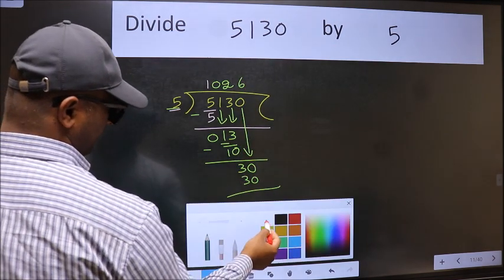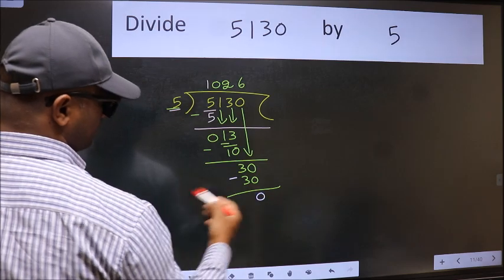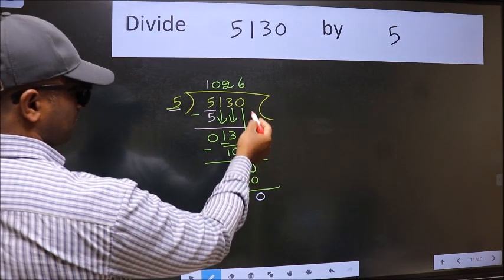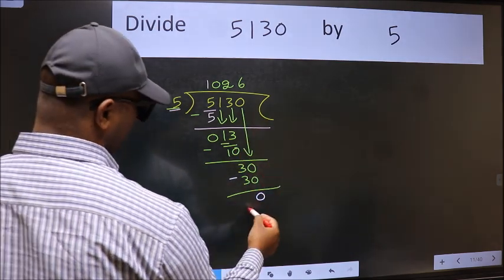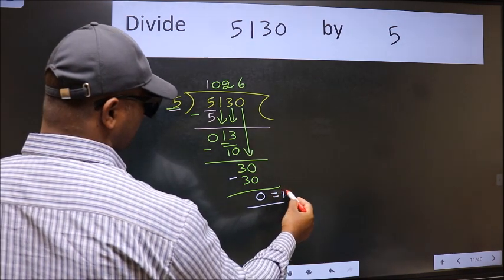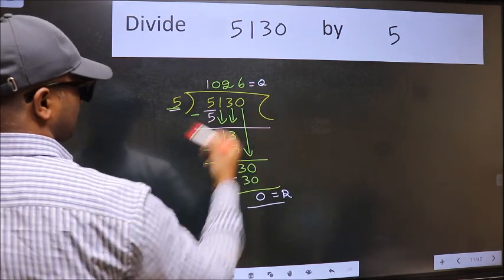Now we subtract. We get 0. No more numbers to bring down, so we stop here. This is our remainder and this is our quotient.